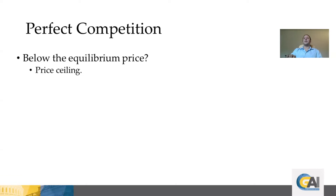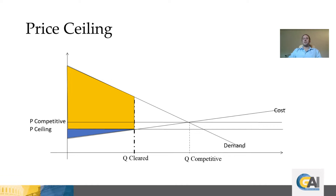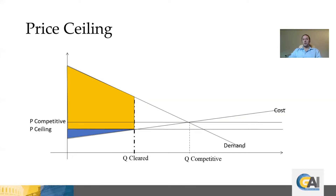In such cases, the price ceiling — which is below the perfectly competitive price — bans the charging of the competitive price, so the price that emerges in the market will be the price ceiling itself. Firms operating in this market will only produce the quantity denoted as Q-ceiling in the figure, because beyond that point their marginal costs exceed the price ceiling. The price will be P-ceiling, and as a result the yellow area emerges as consumer surplus and the blue area as producer surplus.